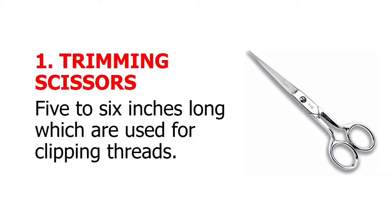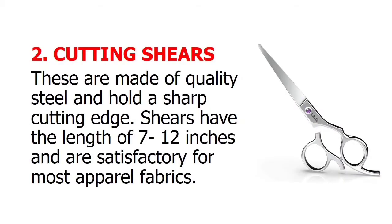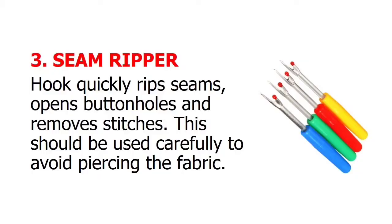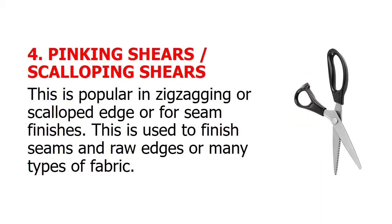Trimming scissor: it is 5 to 6 inches long and used for clipping threads. Cutting shears: these are made of quality steel and hold a sharp cutting edge. Shears have the length of 7 to 12 inches and are satisfactory for most apparel fabrics. Seam ripper: it quickly rips seams, opens buttonholes, and removes stitches — this should be used carefully to avoid piercing the fabric. Pinking shears or scalloping shears: popular for zigzagging or scalloped edges or for seam finishes, used to finish seams and raw edges on many types of fabric.